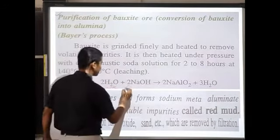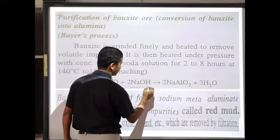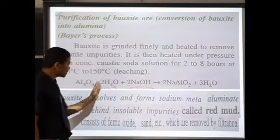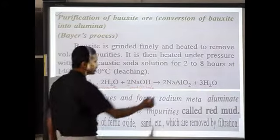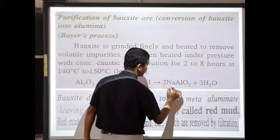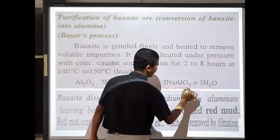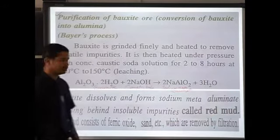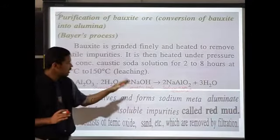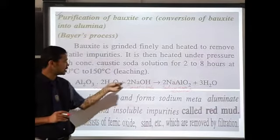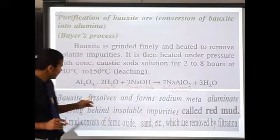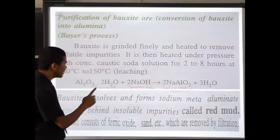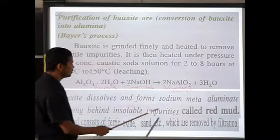Bauxite reacts with caustic soda. Bauxite plus sodium hydroxide (caustic soda) gives sodium meta-aluminate along with water. The bauxite completely dissolves in concentrated sodium hydroxide solution and forms sodium meta-aluminate.